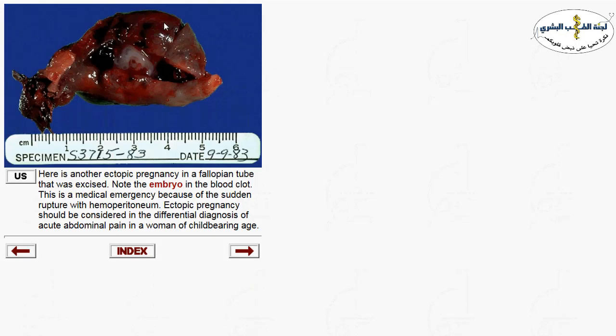This represents a fallopian tube with an embryo — this is a tubal ectopic pregnancy. The patient most likely presented with acute abdomen, coming to the emergency with abdominal pain. Ectopic pregnancy should be in the differential diagnosis for any woman with acute abdomen. Any married woman coming to the emergency with acute abdomen requires ruling out ectopic pregnancy.